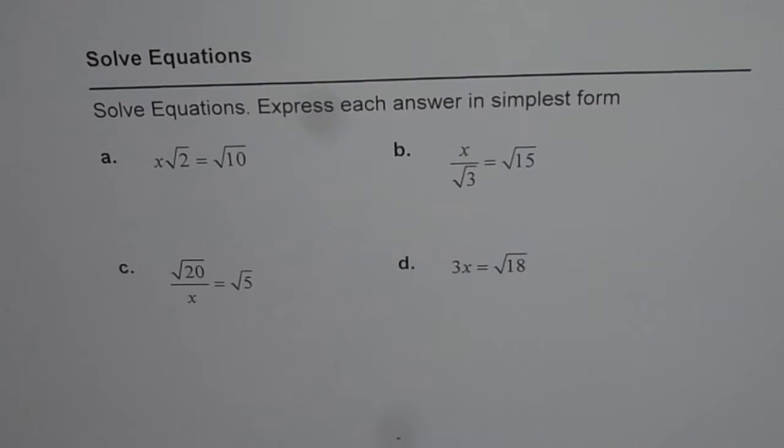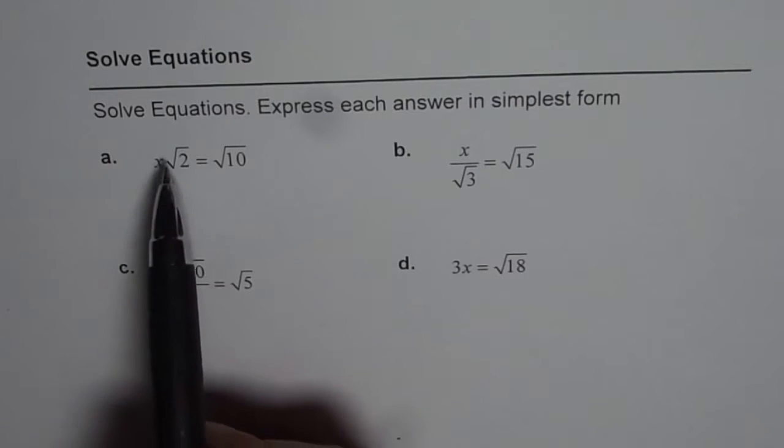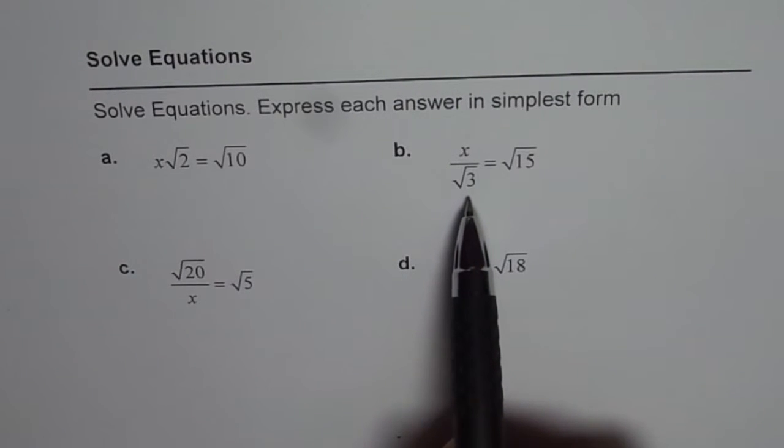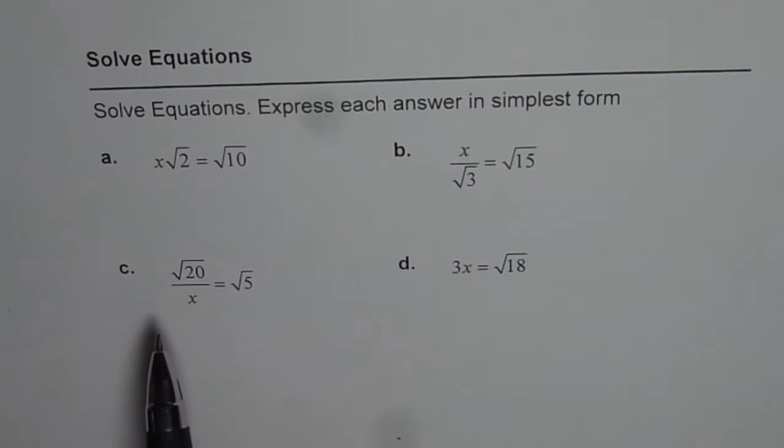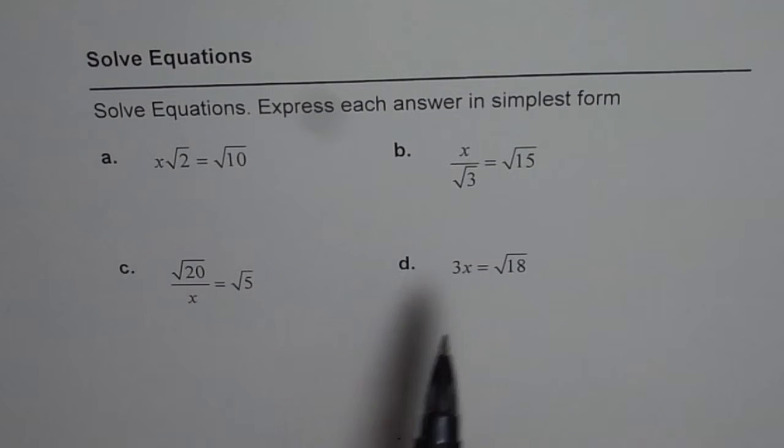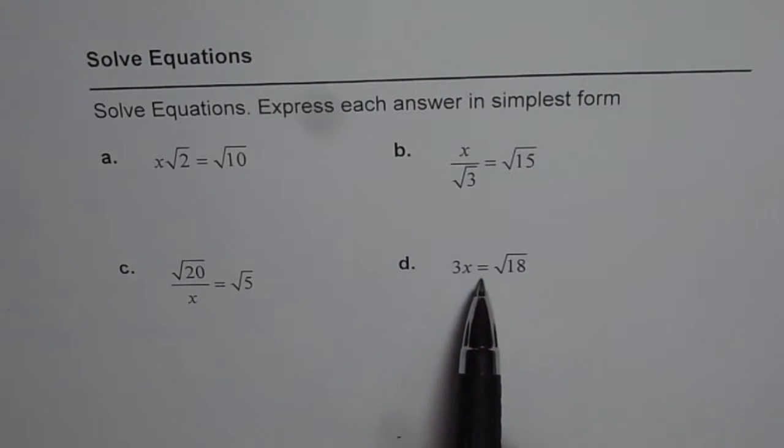I'm Anil Kumar and here we have very simple equations with radicals and we will see how to simplify them. First question is x√2 = √10, then we have x/√3 = √15, c is √20/x = √5, and d is 3x = √18.